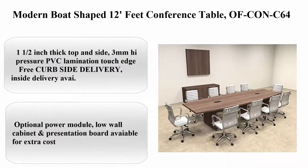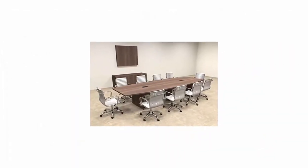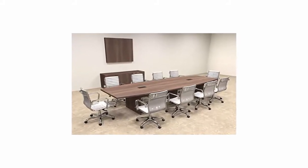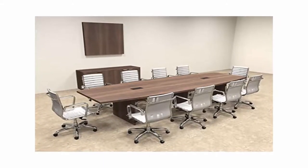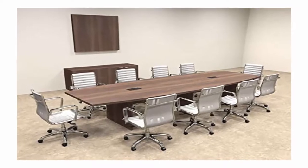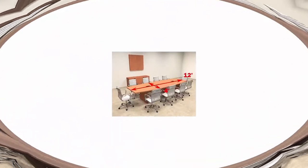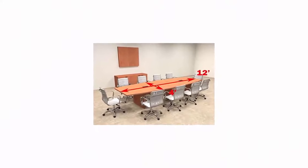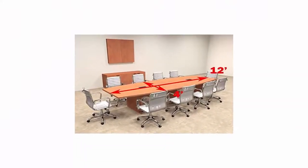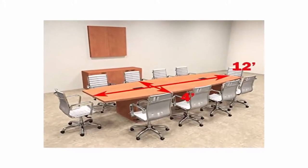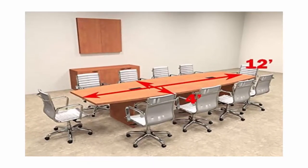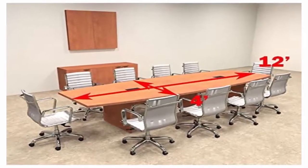Modern Boat Shaped 12 Feet Conference Table, OFCON C64. Furniture Finish: Walnut. Brand: Utmost Furniture. Style: Modern. About this item: 1 1/2 inch thick top and side, 3mm high pressure PVC lamination touch edge. Free curbside delivery, inside delivery with extra cost, check with us before order, ground level, not involves with stairs or elevators. Grommets holes and leveling glides included. Optional power module, low wall cabinet and presentation board available for extra cost. Pictures shown in Walnut.